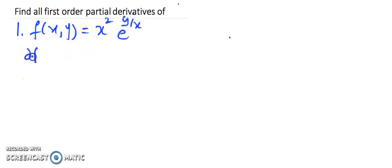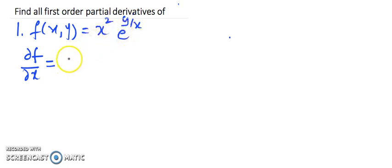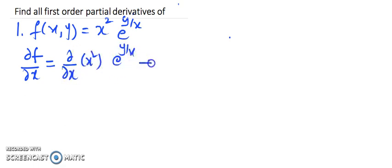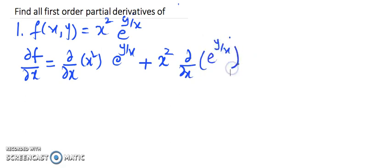Here first I will find what is the partial differentiation of f with respect to x. Now see here x is in x² and x is also in e^(y/x). So I have a product of two functions, so the product rule will come up. So first find the derivative of x² keeping e^(y/x) constant, plus keep x² constant and find the partial derivative of e^(y/x). Differentiation of x² is 2x, times e^(y/x), then x² constant.